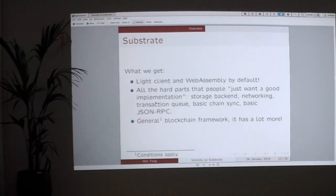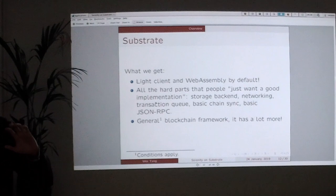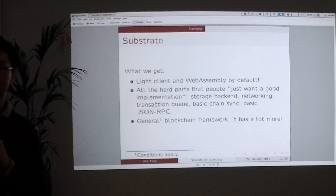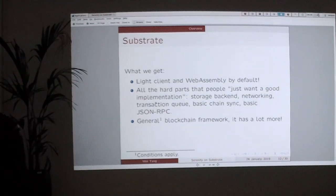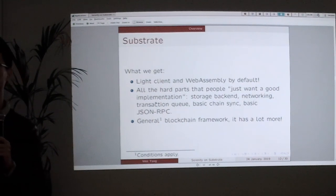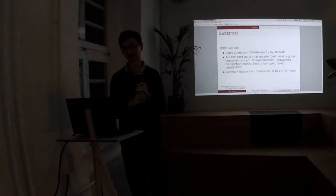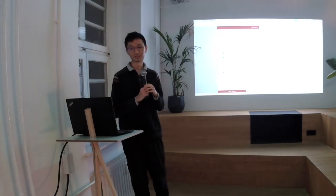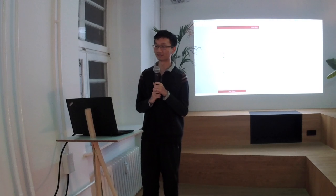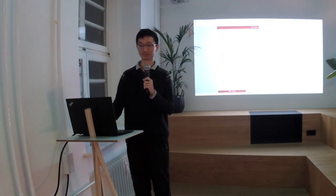What do we get from Substrate? We get a light client and WebAssembly by default. The Substrate framework is built with the light client in mind, so you always have some light client functionality to work with. The WebAssembly is used to run the runtime. We get all the hard parts that people just want a default implementation for — like a safe backend that works, a transaction queue that works, basic syncing, and basic JSON RPC stuff. It's a mostly general blockchain framework and we actually have a lot more, but probably not covered in this talk.